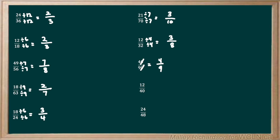Next we have 12 over 40. The highest multiple that can go into both 12 and 40 is 4. So we'll divide the top and bottom by 4 to give us 3 over 10 as our final answer.